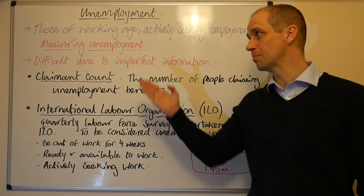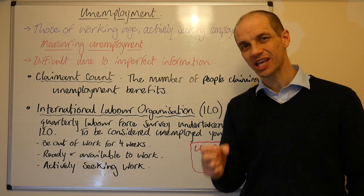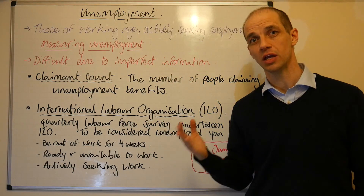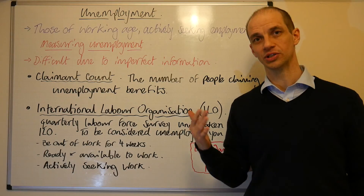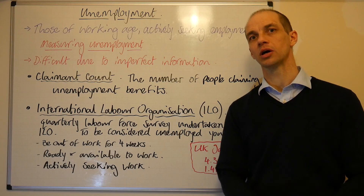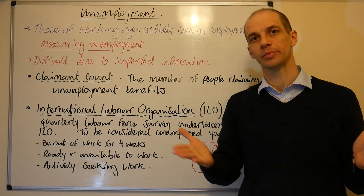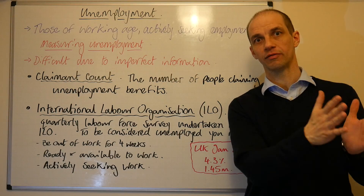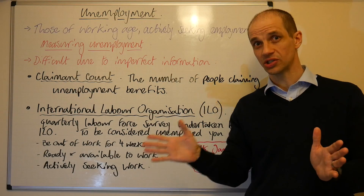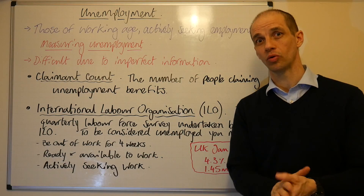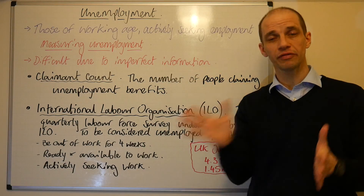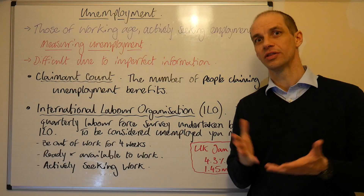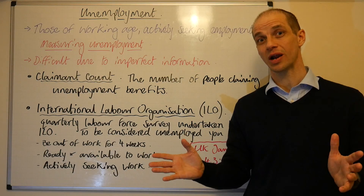When it comes to measuring unemployment, this can be a difficult process, and the reason for that is because of the imperfect information that the government possesses — the information will not be 100% accurate. To take a rather extreme example, we could consider someone who is actively working but is still at the same time claiming unemployment benefits. If they're working cash in hand in the shadow economy, then it's very difficult to actually track down that information.